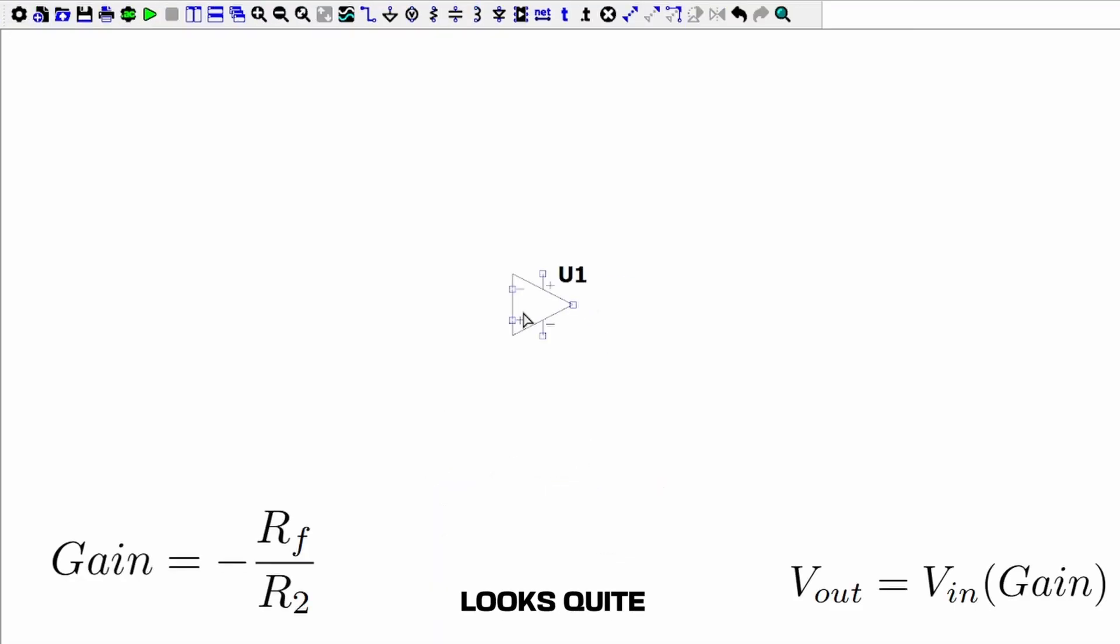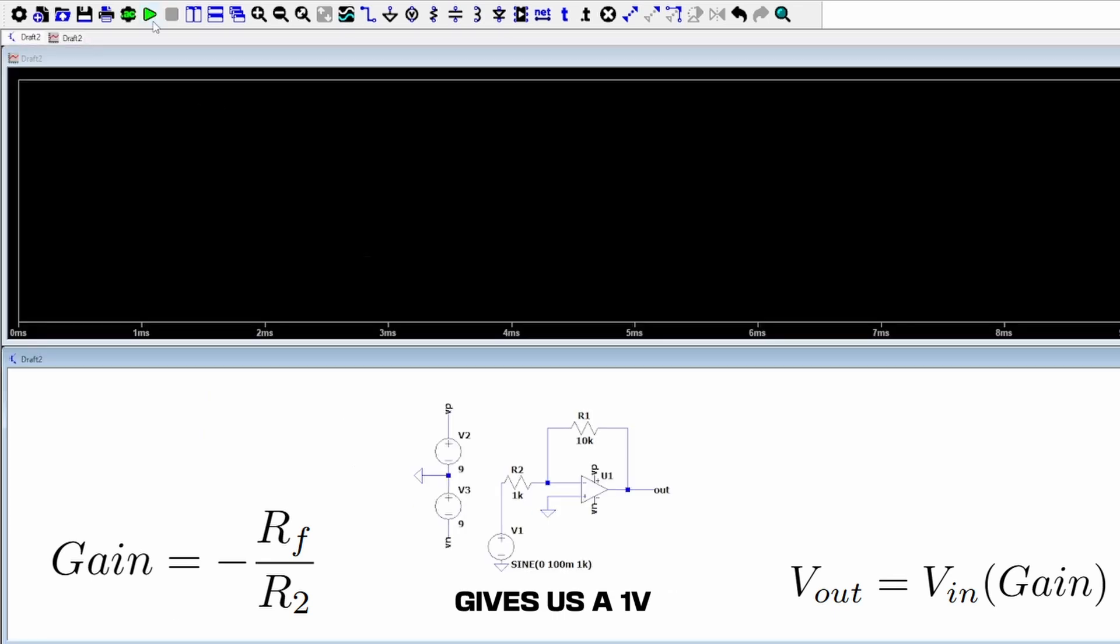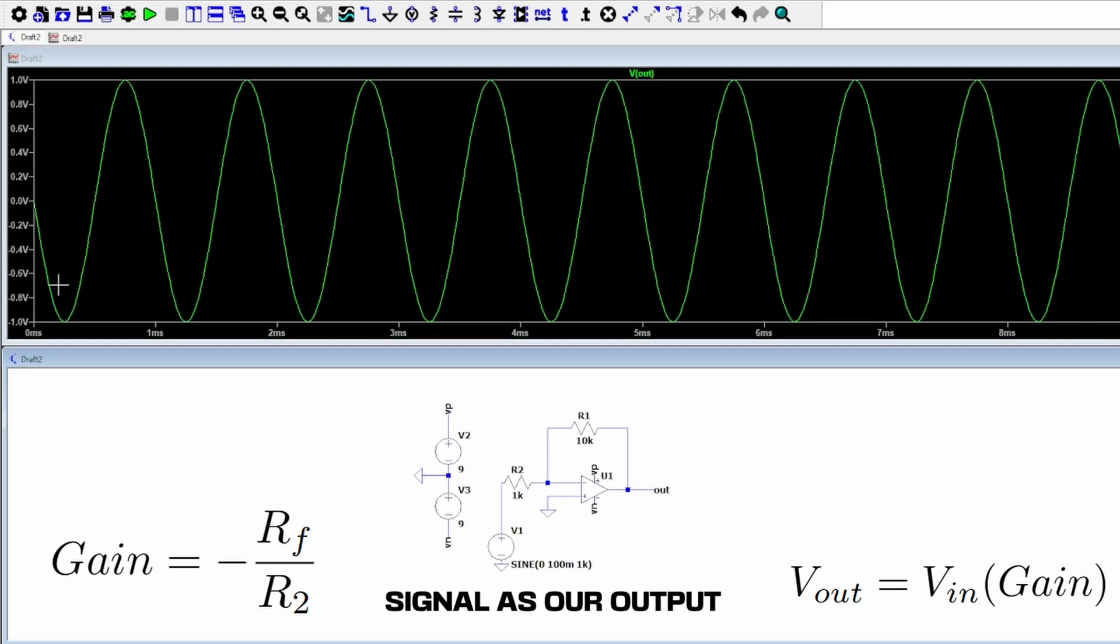Our third configuration looks quite similar to our non-inverting amplifier, except our voltage signal is now coming from our inverting terminal. Using a node voltage derivation, our gain equation is slightly different and has a negative sign. This changes the polarity of our output, which can affect things depending on your application for this amplifier. You can see that once again this takes our 100mV signal and gives us a 1V peak-to-peak signal as our output.